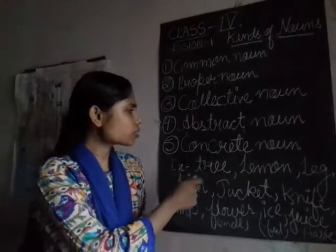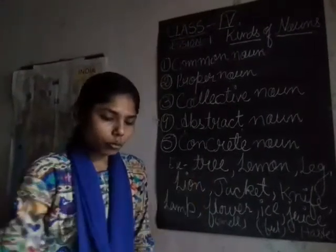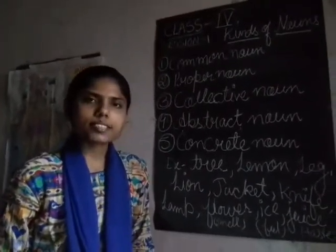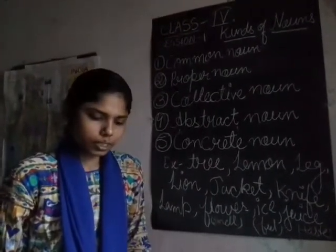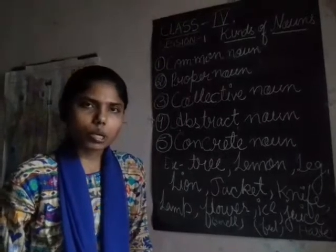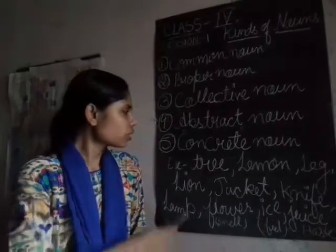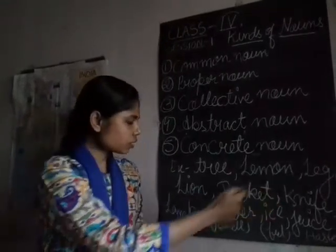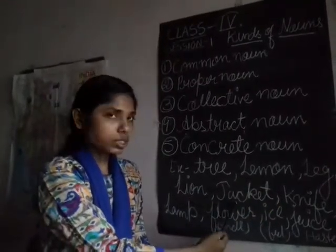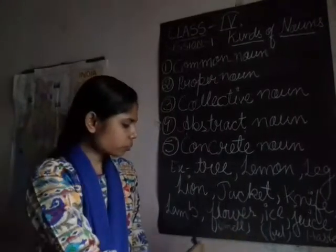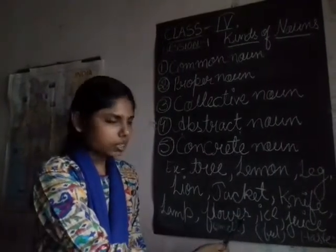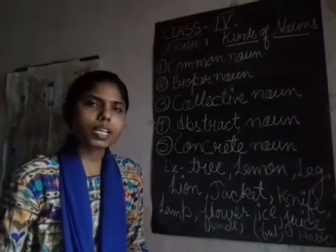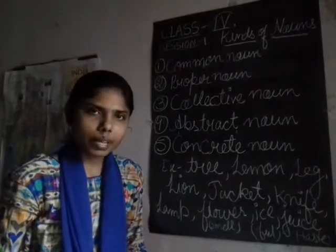The last one is concrete noun. Concrete noun refers to people and things that exist physically — we can see them, we can touch them, or we can smell them. Some examples: tree, lemon, leg, lion, jacket, knife, lamb, flower, eyes, juice. These things we can touch, we can see, we can smell also.